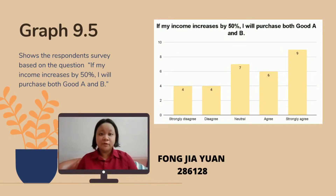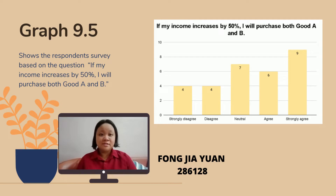Graph 9.5 shows survey results on 'if my income increased by 50%, I will purchase both good A and good B.' From 30 respondents, 9 chose strongly agree, 7 chose neutral, and 6 chose agree. The lowest response was 4 people each who chose strongly disagree and disagree. When consumers' income increases, they will purchase both good A and good B, as their purchasing ability has increased. They are more likely to spend on both goods to satisfy themselves.